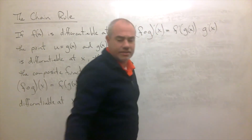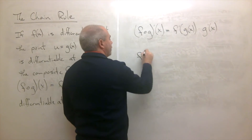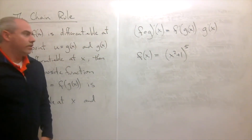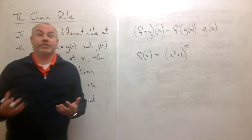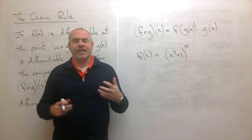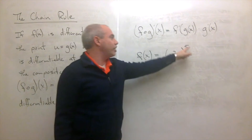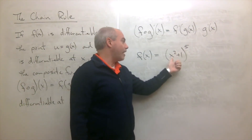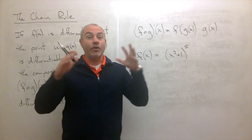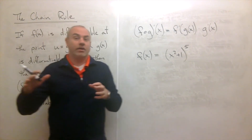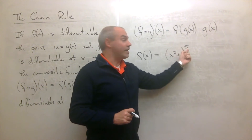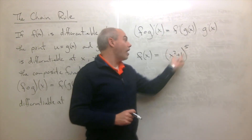Let me show you what an inner and outer function look like. Say we have f of x equals (x² + 1) to the fifth power. This is a perfect chain rule problem — a function inside another function. If I were typing this into my calculator, I'd square x, add one, and the very last thing I'd do is raise it to the fifth. So the outer function is something to the fifth power — a 'blob' raised to the fifth.